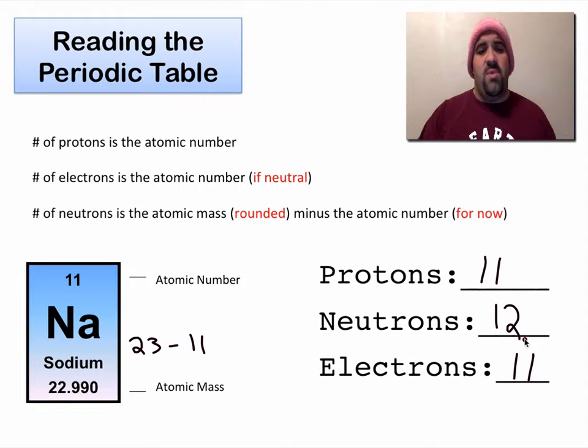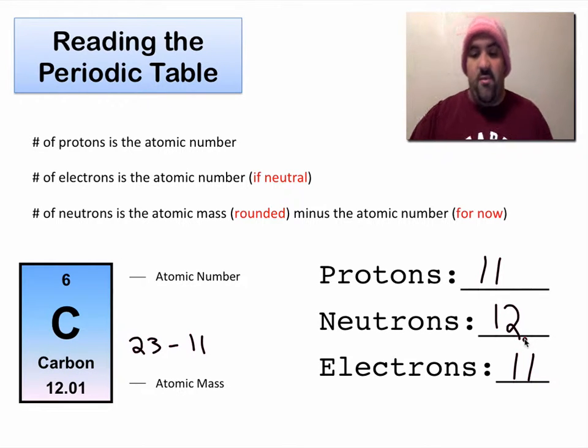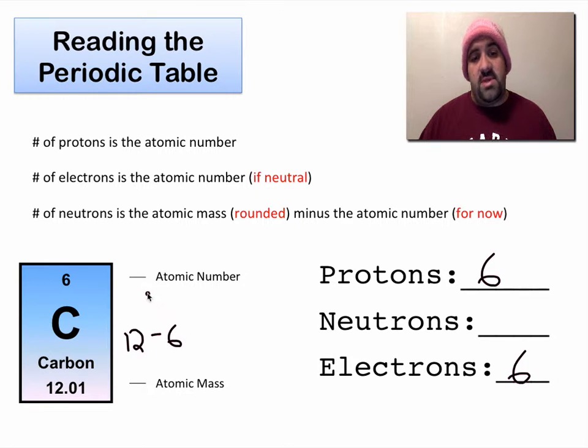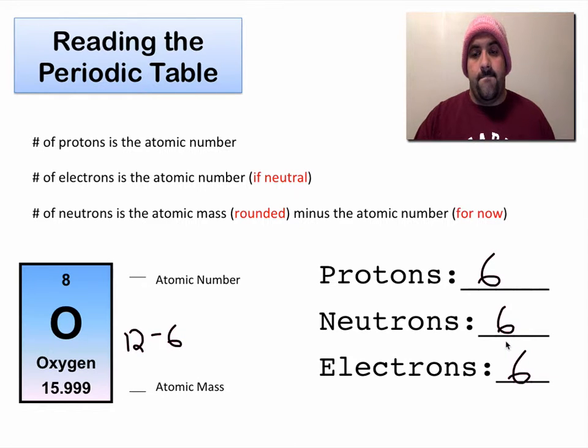And that's pretty much all we got to do if we're looking to determine the number of protons, neutrons, and electrons. So we have a different one here. We now have carbon. And again, the number of protons is the atomic number, 6. The number of electrons if neutral, we're assuming it's neutral, is also the atomic number, 6. And we're going to round this number to get the neutron number. It's the bottom minus the top, or the atomic mass, which is 12 rounded, minus 6, which is the atomic number, equals 6, 6, 6, 6.